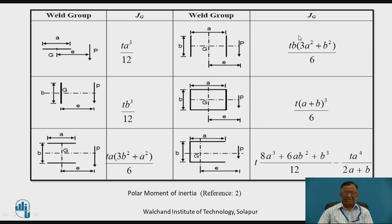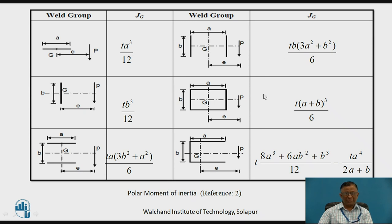Calculating the polar moment of inertia for different weld sections is a tedious job, so we can refer to standard values from the design data book. For example, for a single horizontal weld line about CG with dimension A as length, or for a C-section, the polar moment of inertia can be calculated using the corresponding standard equation from the data book.